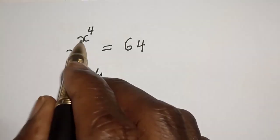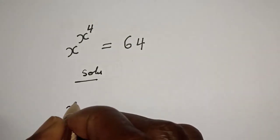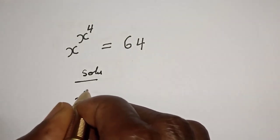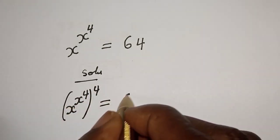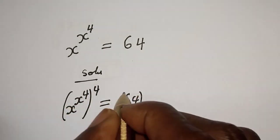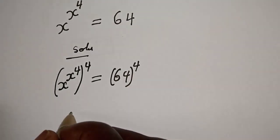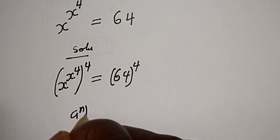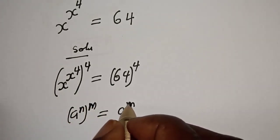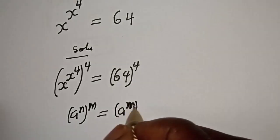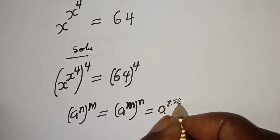Let's multiply the exponent of both sides by 4. That is, S raised to power S raised to power 4, to the power of 4, is equal to 64 raised to power 4. If you have A raised to power N raised to power M, this is equal to A raised to power M raised to power N, which equals A raised to power NM.